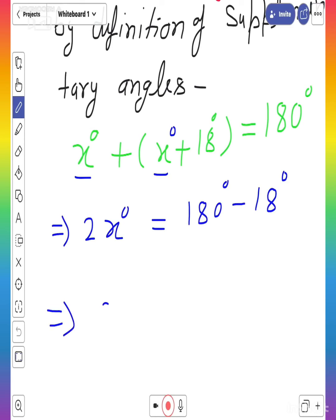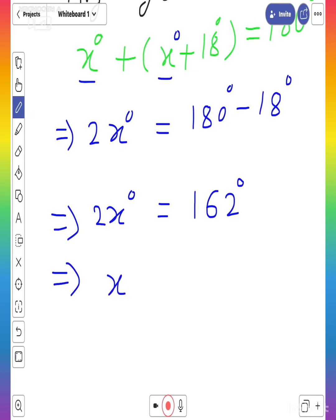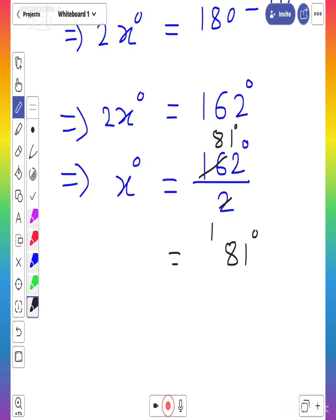So you will get 2x degrees equals 180 degrees minus 18 degrees. This is 162 degrees. When you transpose this 2 to right hand side, then x degrees equals 162 degrees divided by 2. So here, you can cancel it. That is 81 degrees.